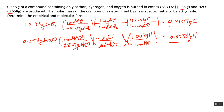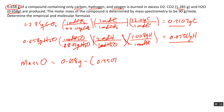We now have the masses of carbon and hydrogen. Since the question says there are three elements — carbon, hydrogen, and oxygen — we find the mass of oxygen by taking the difference: the total mass of the compound, 0.658 grams, minus the mass of carbon (0.3507 g) plus hydrogen (0.07361 g). The answer is 0.2334 grams of oxygen.